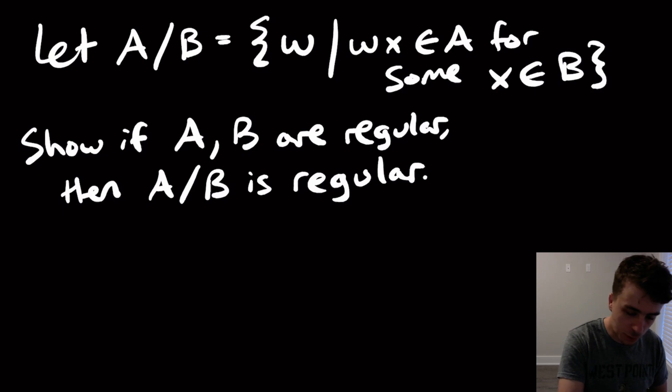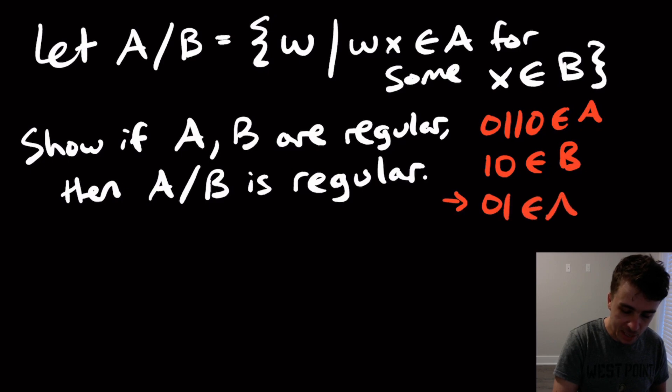So for example, if 0, 1, 1, 0 is in A, and 1, 0 is in B, then that implies that 0, 1 is in A divided by B. Because what we're doing is we're chopping off some piece, which is this 1, 0, off of this string. So what we're left with is 0, 1, which means that 0, 1 is in the division language.